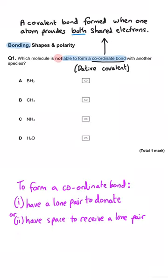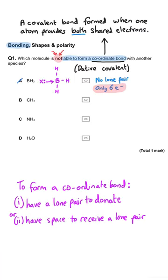In BH3, boron has three electron pairs around it and because boron is in group three there won't be a lone pair, so boron will be able to receive a lone pair in a coordinate bond. Whereas in B, the carbon atom is in group four and is bonded to four hydrogen atoms, so it will have eight electrons in four pairs. There are no lone pairs and no spaces for lone pairs to be donated into, so this will not be able to form a coordinate bond — B is the correct answer.